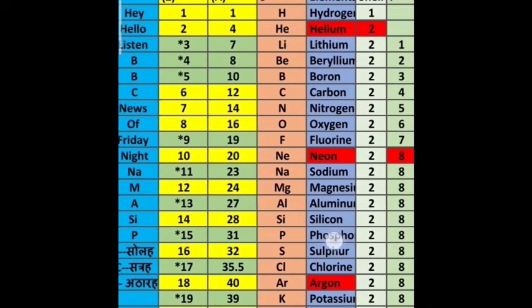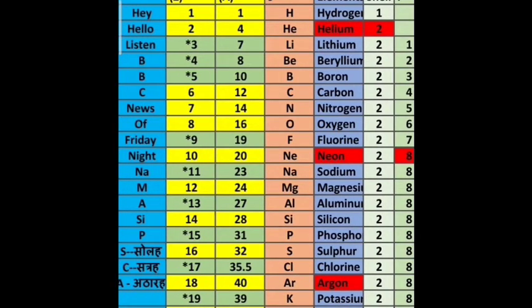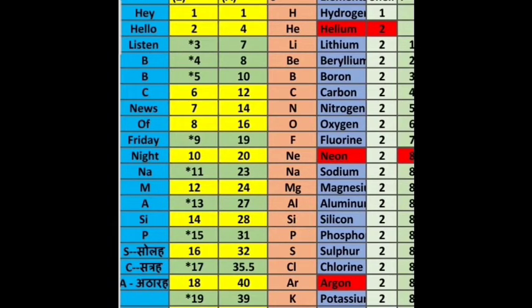These are the element names, right from hydrogen and helium, lithium, beryllium, up to calcium. We will first see atomic numbers 1 to 10. To remember them, use this mnemonic: 'Hey Hello Listen BBC News Of Friday Night.' This is what you have to learn.